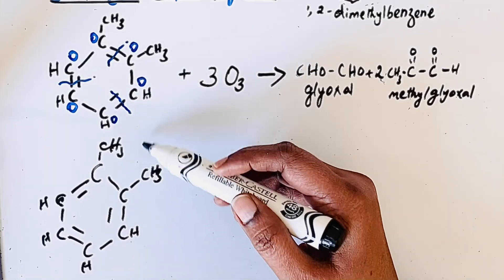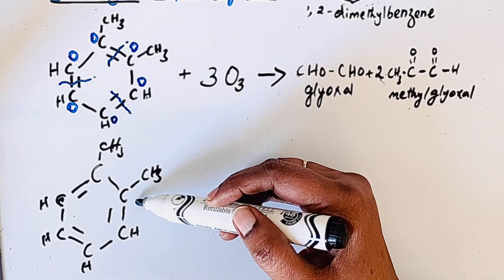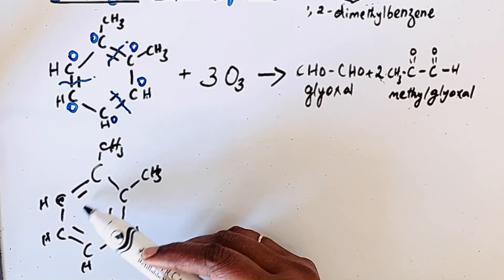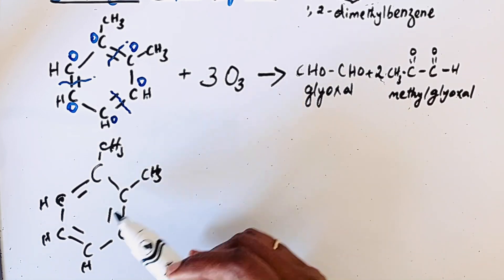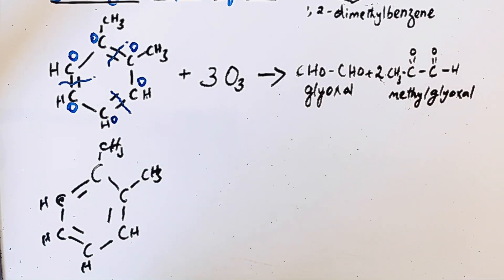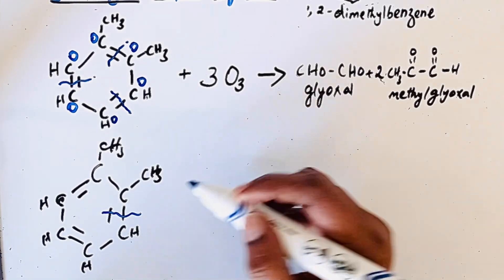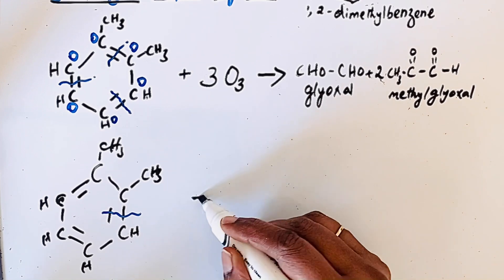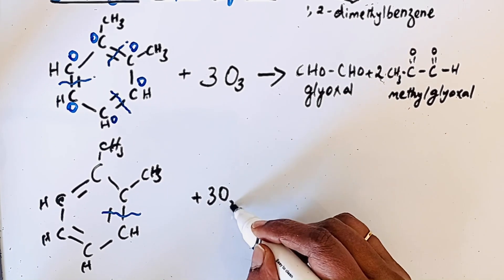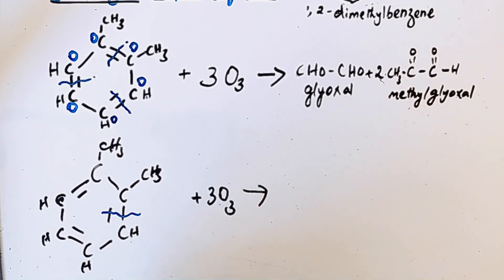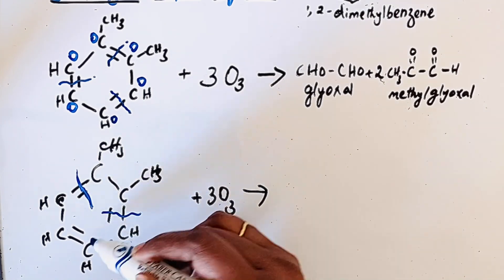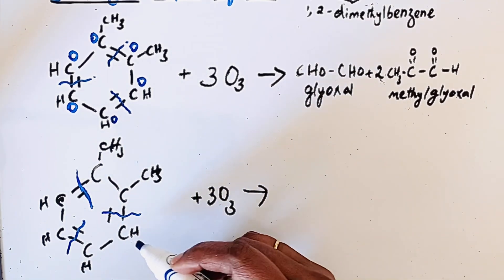We can also draw another resonance hybrid of ortho-xylene, where the double bond positions shift. If such resonance is possible, the cleavage takes place in the same way. Whenever the molecule reacts with 3 molecules of ozone (3 O3), cleavage occurs wherever there is a double bond.